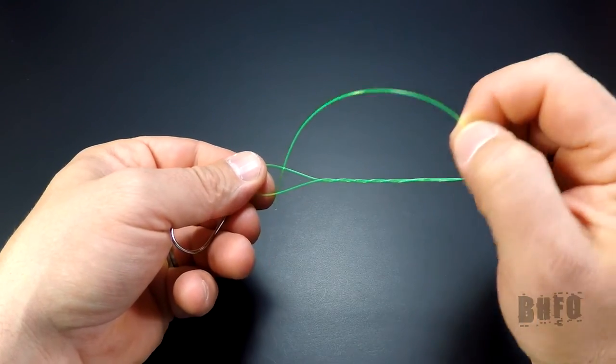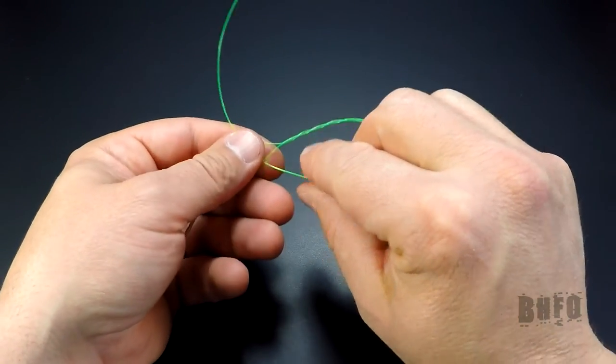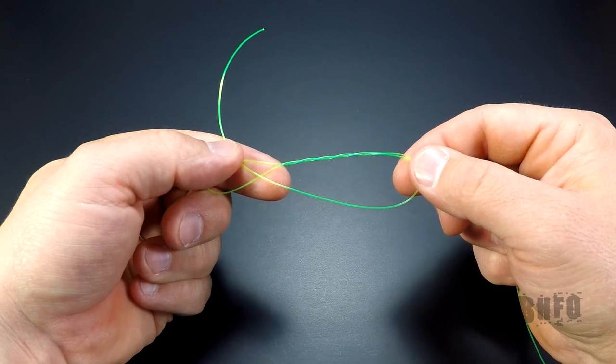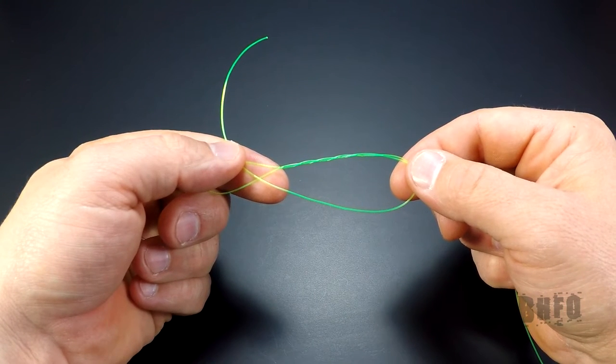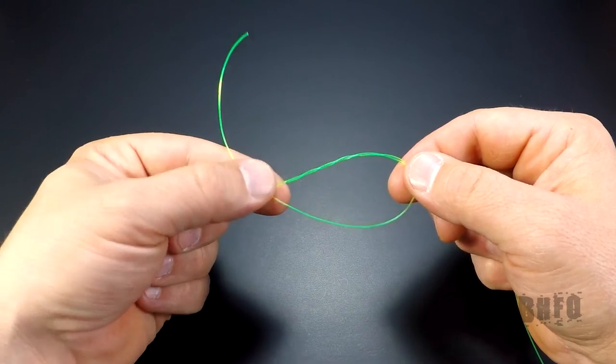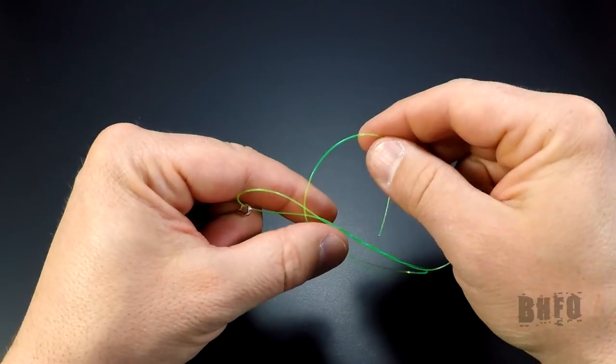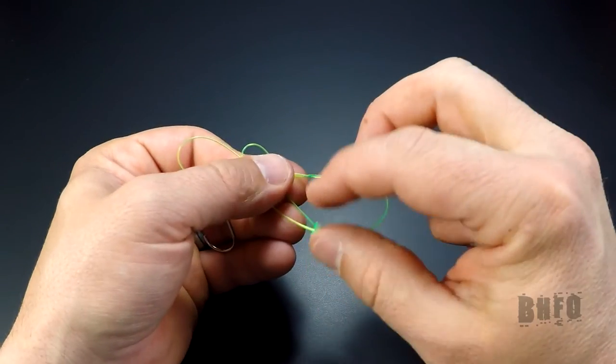Pull it through. This creates a second loop. Now take the tag and put it through the loop you just created. You should end up with something like this.